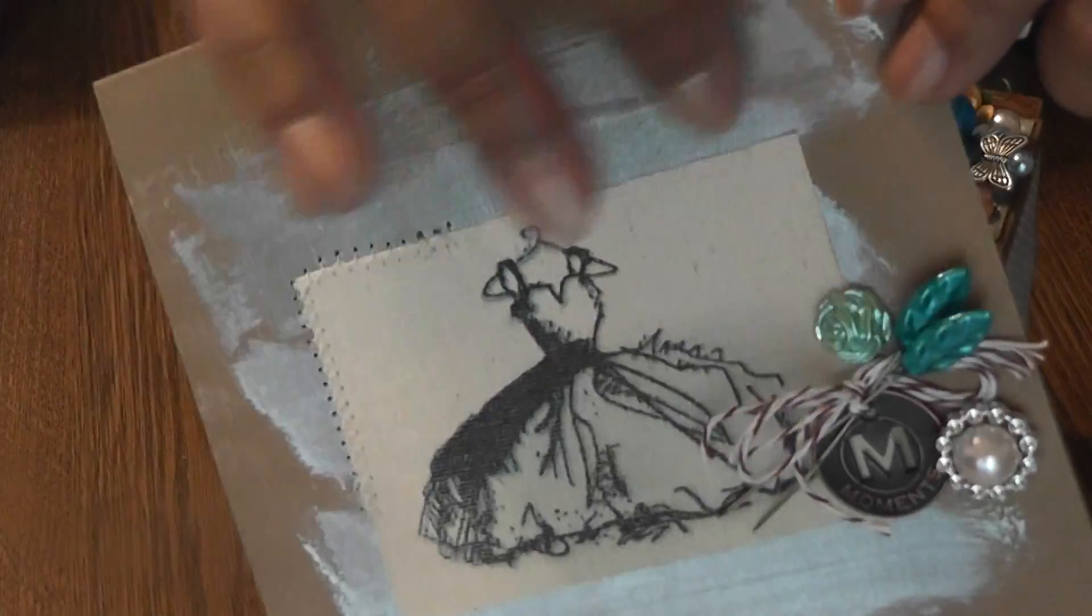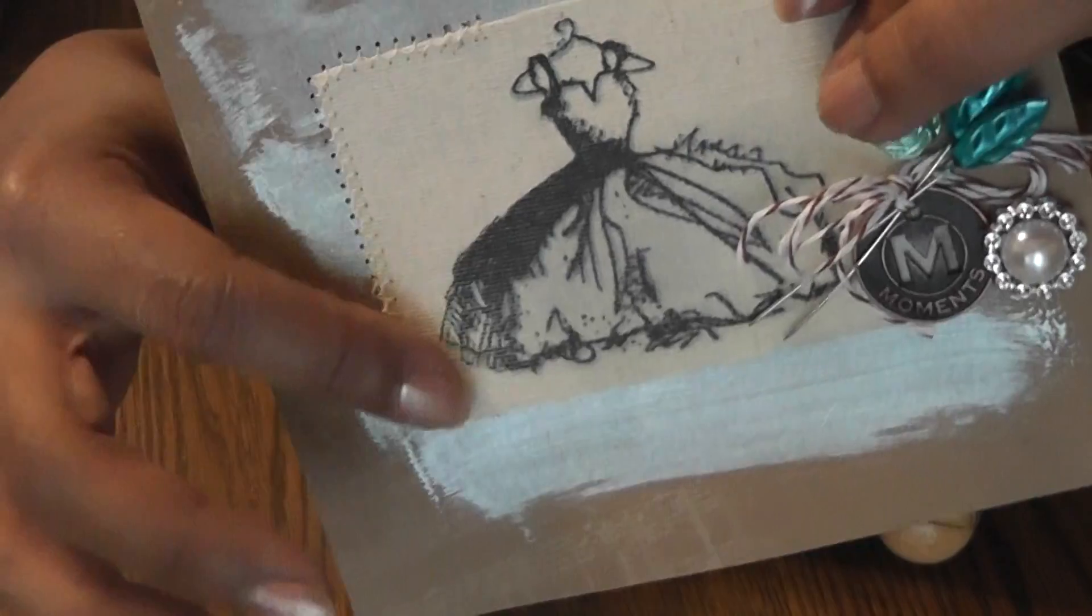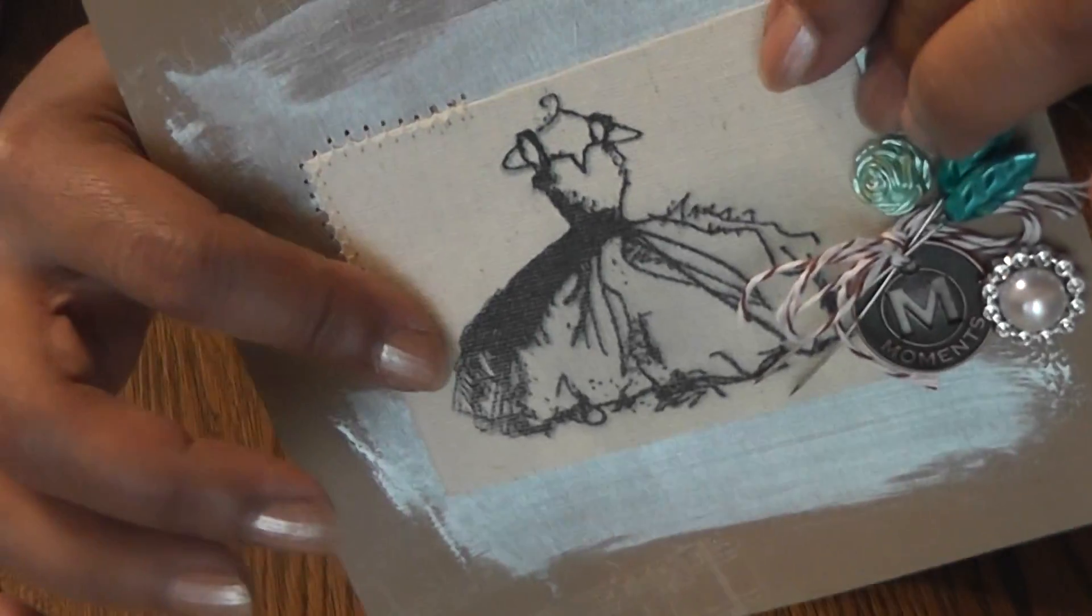Then I went over it with some metallic paint, just back and forth. And then I added this little sticky back canvas that Karen sent me in a RAK.